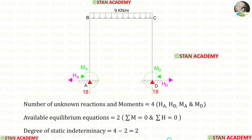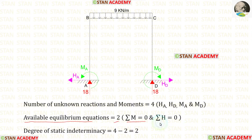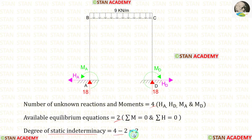Now let us find the degree of static indeterminacy. In this frame, the number of unknown reactions and moments are 4: the horizontal reactions Ha and Hd, and the moments Ma and Md. The available equilibrium equations are 2: sigma M = 0 and sigma H = 0. The degree of static indeterminacy is 4 minus 2, which equals 2.